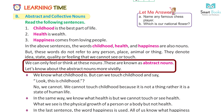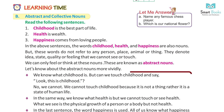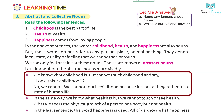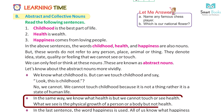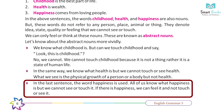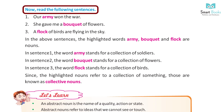These are known as abstract nouns. We know what childhood is, but can we touch childhood and say 'look, this is childhood'? No, we cannot touch childhood because it is not a thing — rather, it is a state of human life. Similarly, we know what health is, but we cannot touch or see health; what we see is the physical growth of a person or body, but not health. Likewise, we know what happiness is, but we cannot see or touch it — if there is happiness, we can feel it, not touch or see it.